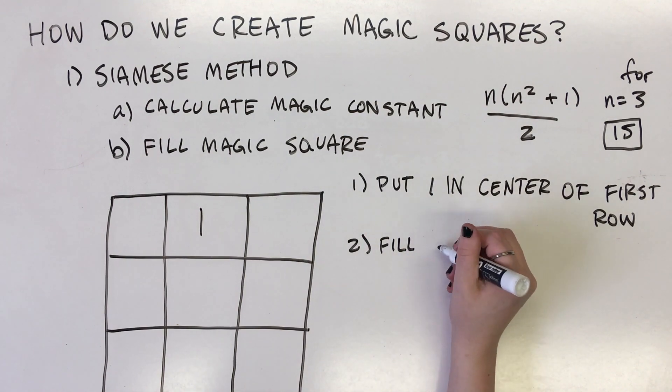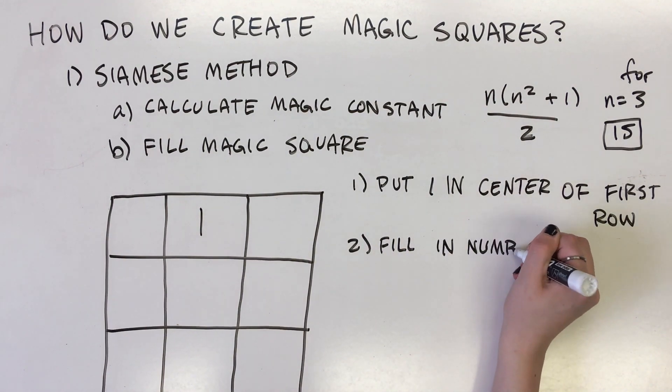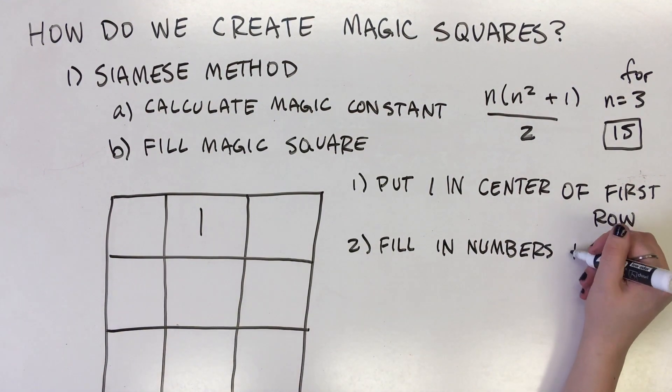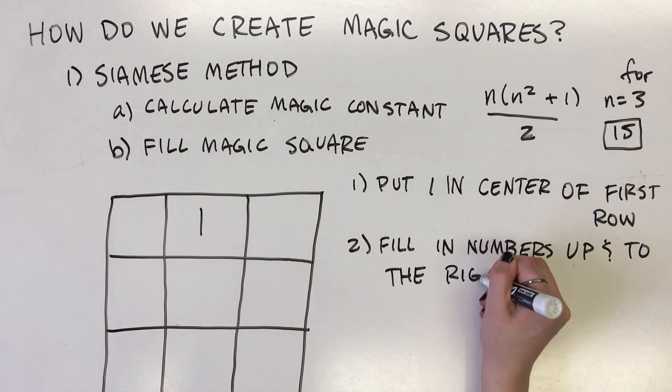We proceed by filling in the remaining numbers using an up 1, right 1 pattern. You will always fill in the numbers sequentially 1, 2, 3, 4, etc. by moving up one row, then one column to the right.